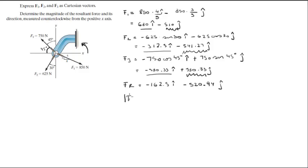To get the magnitude, calculate the square root of 162.5 squared plus 520.94 squared. This gives a resultant force magnitude of 545.7 newtons.